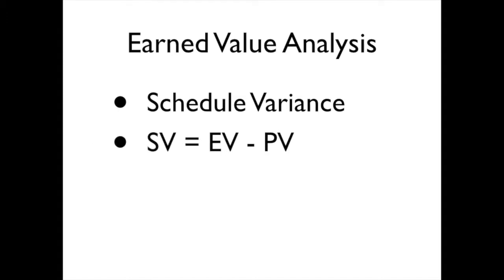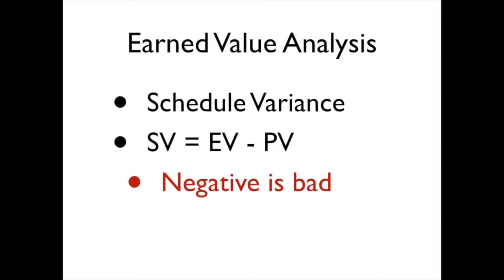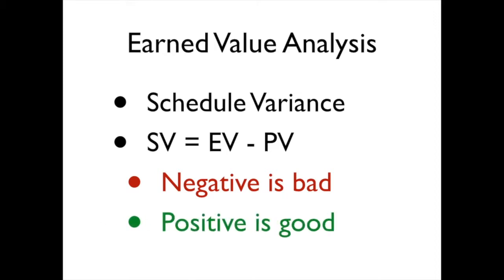Schedule variance is calculated as the earned value minus the planned value. Once again, negative values are considered bad. So if we have a negative schedule variance, we're going to say that we're behind schedule. Positive is good, meaning that we're ahead of schedule or we're getting more done than we had anticipated.